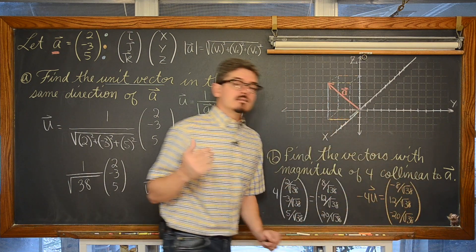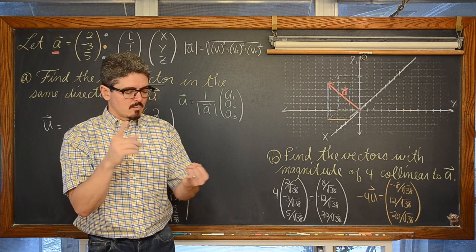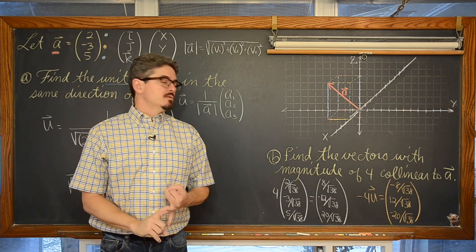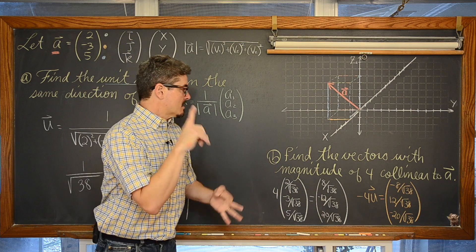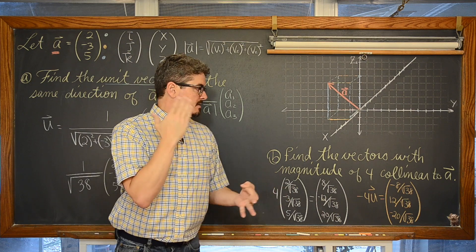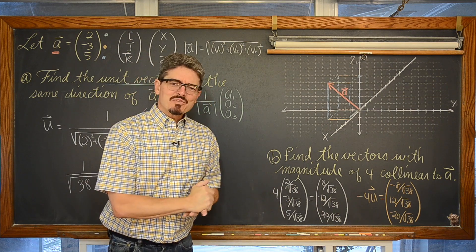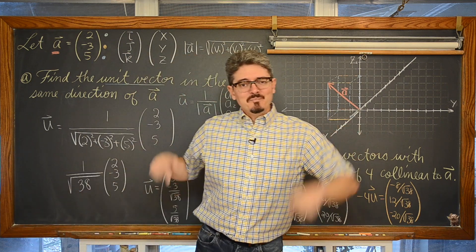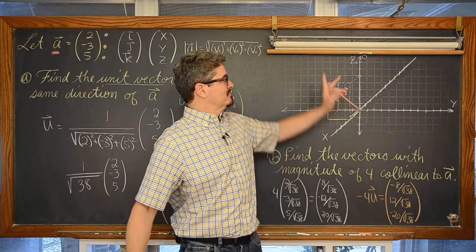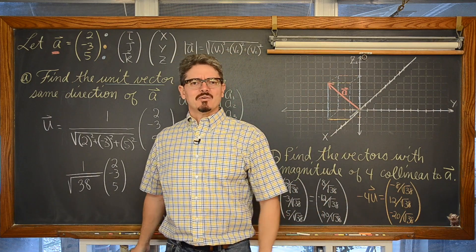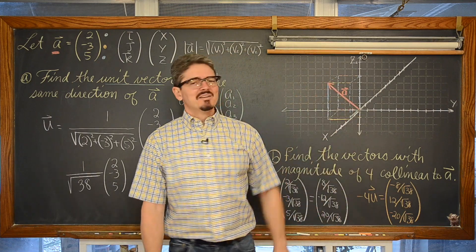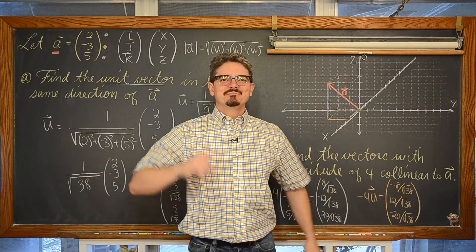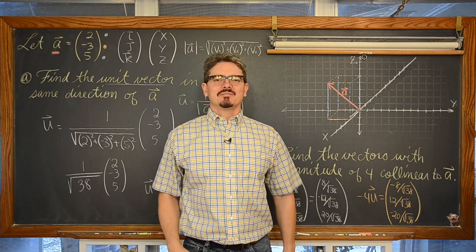And that is how you work with unit vectors, find magnitude, and talk about or test collinearity for 3 dimensional vectors. It is really just the same as 2 dimensional, except for that really much more complicated drawing. I am Mr. Tarrou. BAM! Go to your homework!